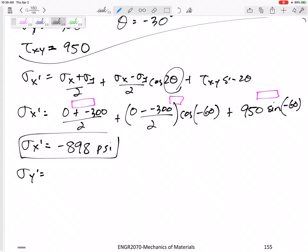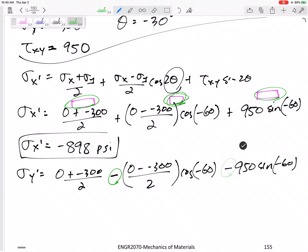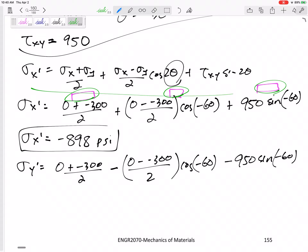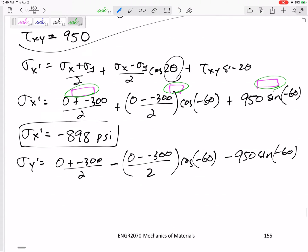My new sigma y would be, I'm going to do this over completely. It's going to be the same sigma x plus sigma y, but instead of this plus here, I'm going to change that to minus. Zero minus negative 300 divided by 2 cosine negative 60. And then instead of that plus, I'm going to have that minus. 950 sine negative 60. So now if I had been keeping up with this number and this number and this number, I would just say this number now minus this number now minus that number, right? Because my sigma y is the same equation as sigma x, just that plus is now a minus. That plus is now a minus.